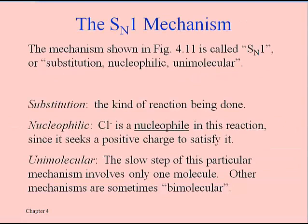In talking about forming carbocations and how fast they form, the name for that overall mechanism is called SN1. The S stands for substitution. Nucleophilic is what the N is about, because it's the halogen that is attracted to the positive charge that ends up forming our product. A nucleophile is anything such as a halide ion that is generally negative in charge but is attracted to positive charge. In these reactions, it's that positive charge on the carbon that completes the reaction.